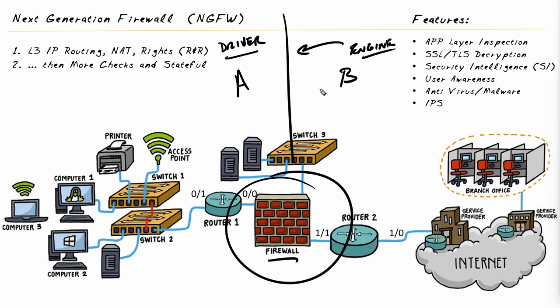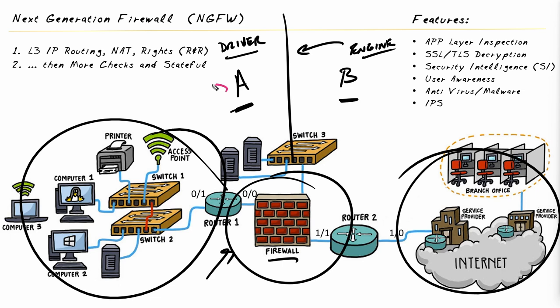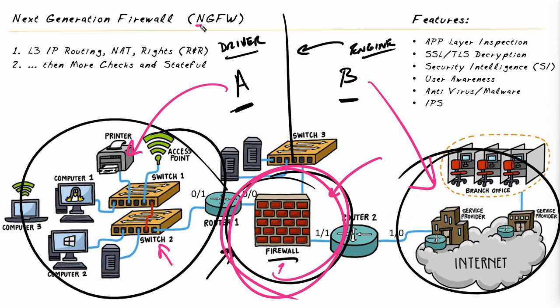In our topology, this firewall would be used to protect one part of the network from the other — controlling and protecting traffic flows between the two sides. It's more important than ever to realize that just one device doing protection isn't enough. We also need devices inside the network and software on our hosts doing protective services. That said, we're going to focus our attention on this firewall and why it's called a next-generation firewall.